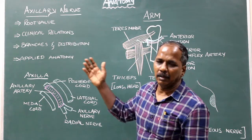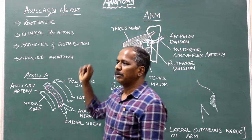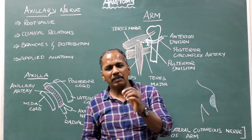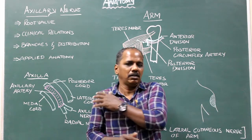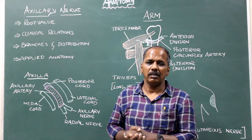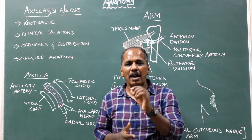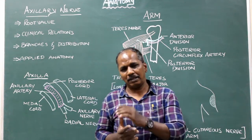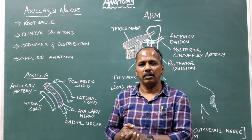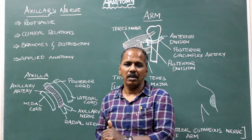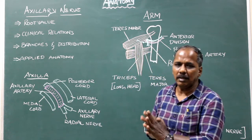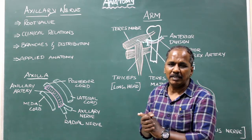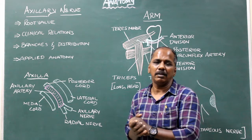Axillary nerve. It is the chief nerve of the shoulder. It arises from the posterior cord of brachial plexus. Root value: anterior primary rami of C5-C6 spinal nerves.